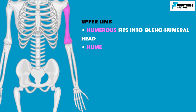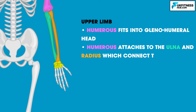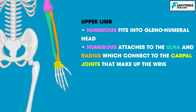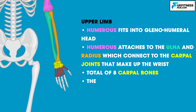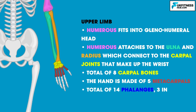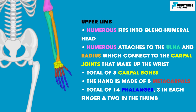Moving down, the humerus attaches to the ulna and radius, which are connected to the carpal joints that make up the wrist. There are a total of 8 carpal bones, and the hand is made up of 5 metacarpal bones. Each metacarpal forms a joint with the phalanges that make up the fingers. There are a total of 14 phalanges — 3 in each finger and 2 in the thumb.